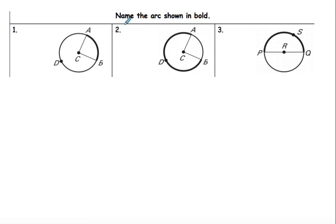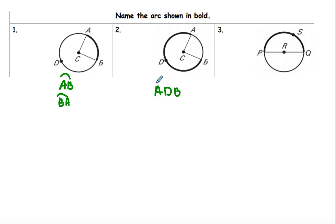Name the arc shown in bold. This little arc shown in bold is a minor arc, so that arc is going to be arc AB. Number two: the arc here is going to be arc ADB — it has to be labeled with three letters because it's a major arc. It can also be BDA. The D has to be in the middle because that tells us what direction it's going.